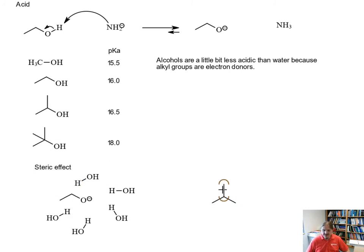And there are a certain number of water molecules that can fit around the ethanol molecule. Well, as the molecule gets bigger, let's just skip right over to tert-butyl alcohol. As the molecule gets bigger, there are fewer water molecules that can fit closer to the anion. And that's because the tert-butyl group is so large. It is in the way.